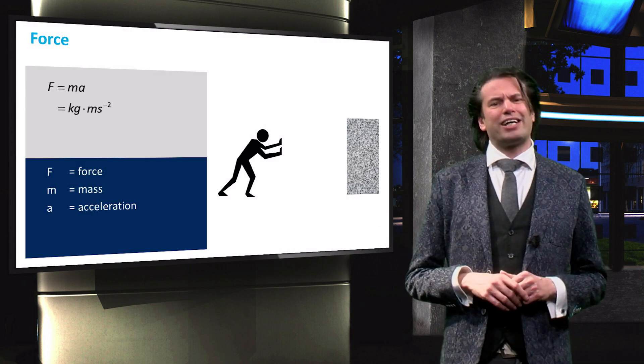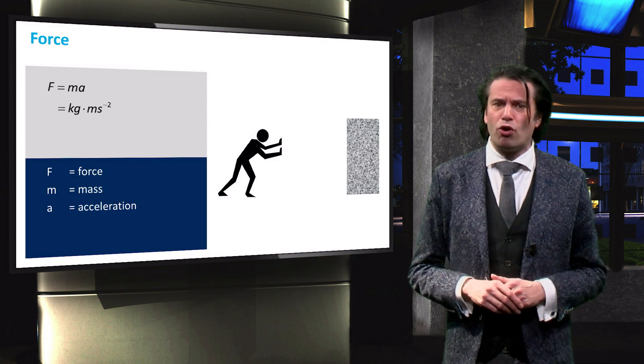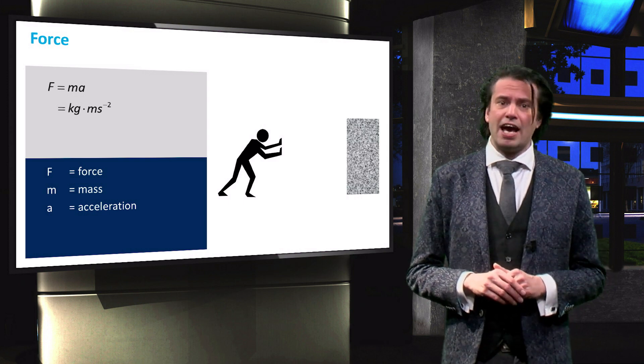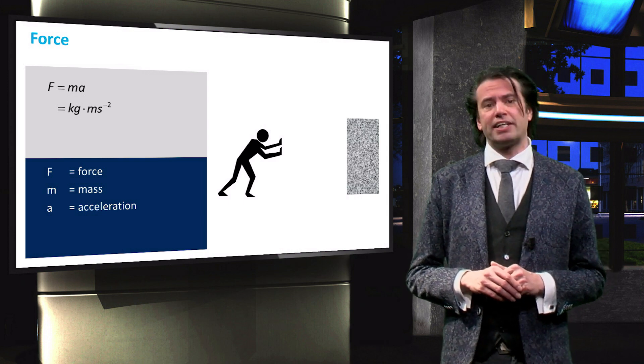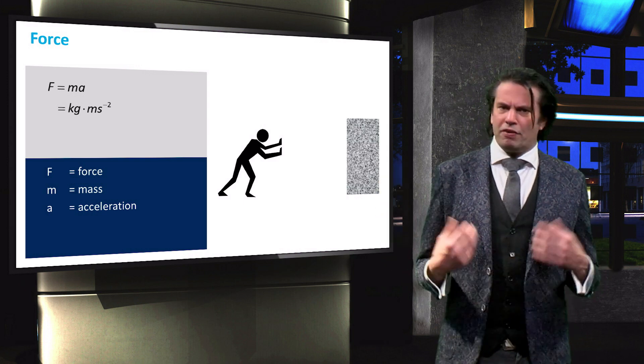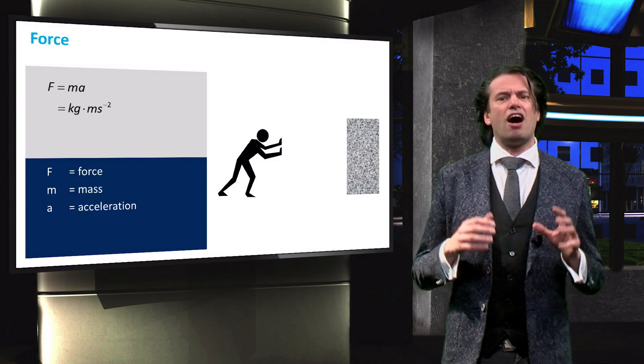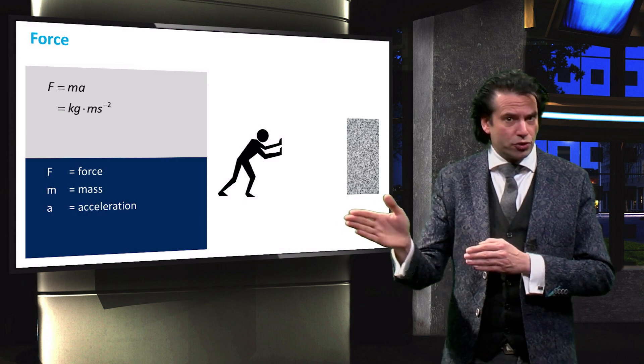According to Newton's second law, the acceleration A depends on the magnitude of the exerted force F and the mass M of the object that undergoes the acceleration, as shown in this equation. We can gather from the figure that the force and the acceleration are vectors or directional quantities.